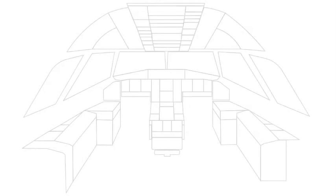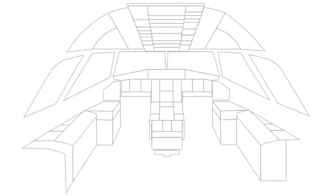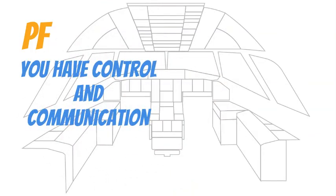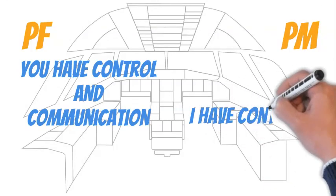After air traffic controllers (ATC) and cabin crew (CC) are informed about flight crew (FC) intention and at the right time, the PF ask PM overtaking aircraft control by the phrase, 'You have control and communication.'